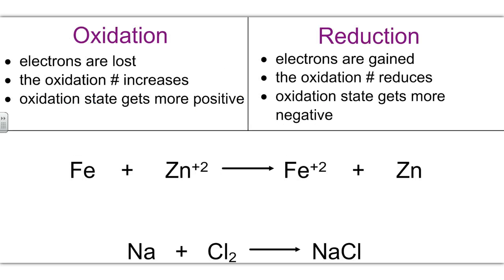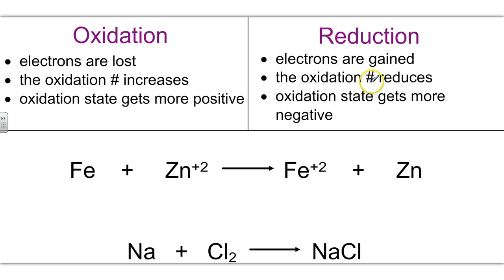Oxidation is the part of the reaction where electrons are lost, in which case the oxidation number will increase and become a more positive number. In reduction, electrons are gained, which causes the oxidation number to reduce and therefore become a more negative value.